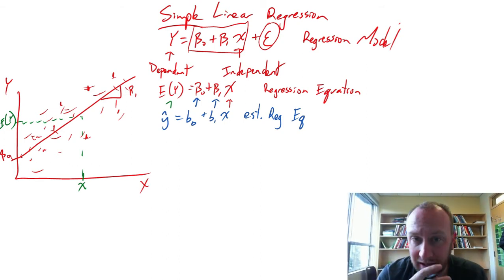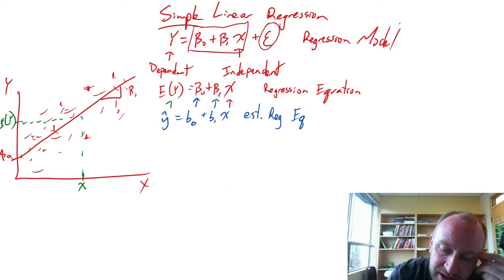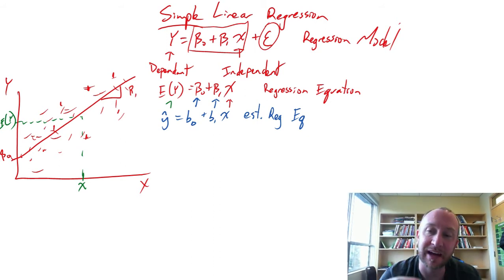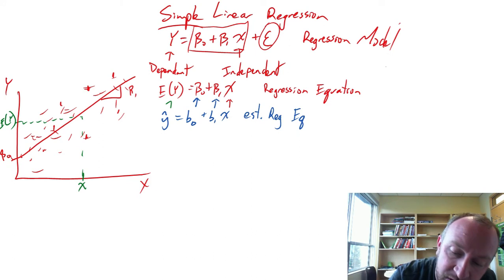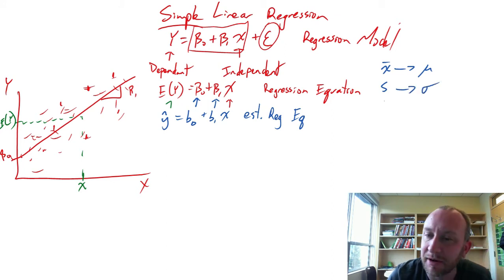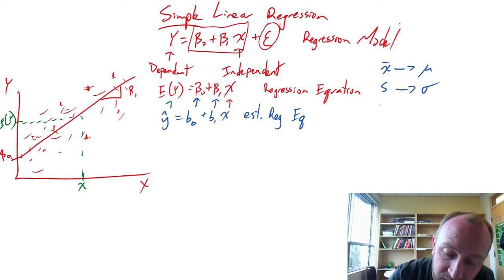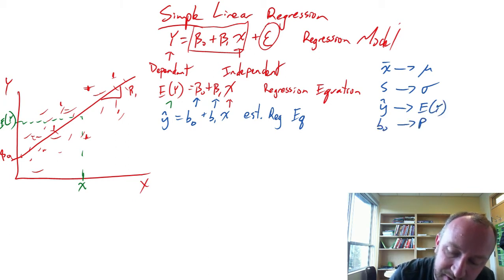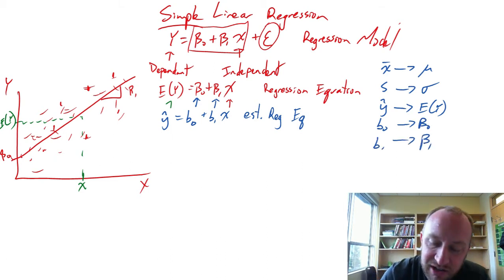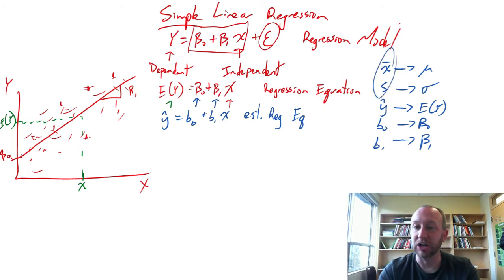Just like everything else we've been doing, we've been working with point estimates from a sample of an unknown population parameter. We'd have x-bar as a point estimate of mu, s as a point estimate of sigma, or s-squared as a point estimate of sigma-squared. Now we're going to have y-hat as a point estimate of the expected value of y, b0 as a point estimate of beta-0, and b1 as a point estimate of beta-1. Like all the others, there's been some uncertainty, and we've developed confidence intervals around those point estimates.